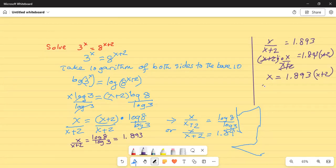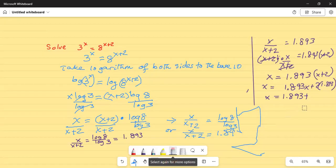Now, I will distribute 1.893 to both the terms on the right hand side. So, it will be 1.893 x plus 2 times 1.893, or x is equal to 1.893 plus 2 times 1.893 is 3.786. This is, I made a mistake. This should be 1.893 x plus 3.786.